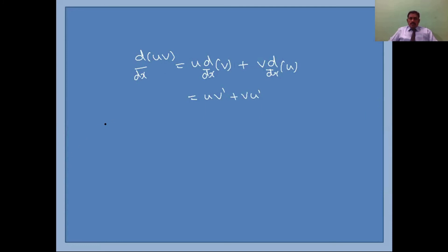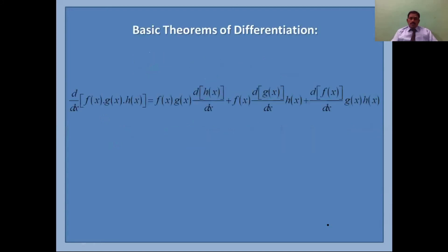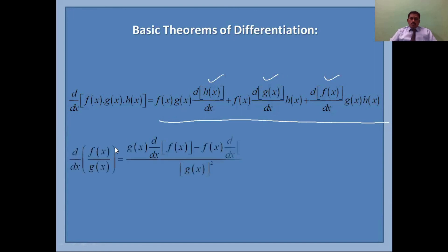For three functions u, v, w: same procedure — keep any two and differentiate the third one. So d/dx of uvw equals vw·u′ + uw·v′ + uv·w′. At any one time you differentiate only one function, and the sum of all possibilities gives the result.